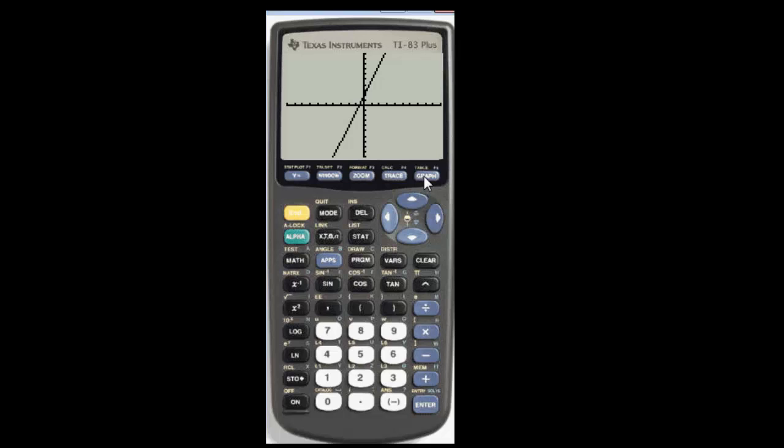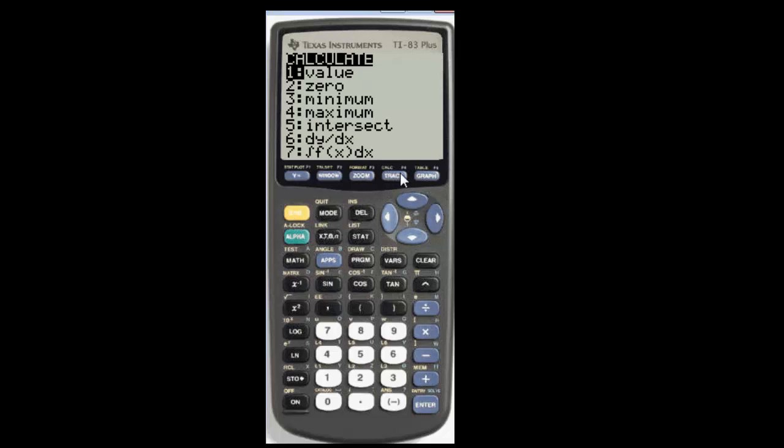This time I'm going to go to second, trace. This gives me the calculate menu and right here at the top, value is the utility I want. So since 1 is already highlighted, it's black here, I'm going to go down to enter and I'm going to click on the enter button.